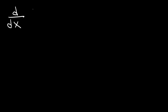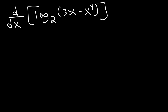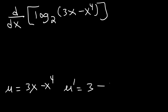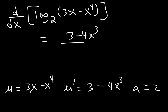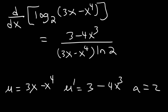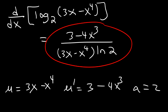What is the derivative of log base 2 of 3x minus x to the 4th? So u is 3x minus x to the 4th power. U prime: the derivative of 3x is 3, and the derivative of x to the 4th is 4x cubed. And a, the base, is 2. Using the formula u prime divided by u times ln a, or ln 2, you just need to identify u, u prime, and a to get the answer.